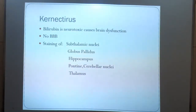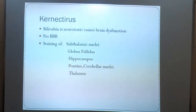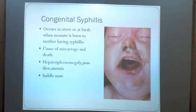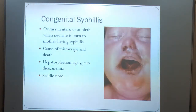Kernicterus is another condition — a neurotoxic cause in which bilirubin is neurotoxic and causes brain dysfunction. There is staining of the subthalamic nuclei, globus pallidus, hippocampus, and thalamus, with yellowish staining due to jaundice. Congenital syphilis occurs in utero or at birth when a neonate is born to a mother having syphilis. It is a cause of miscarriage and death, and there is a saddle nose deformity.